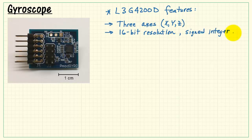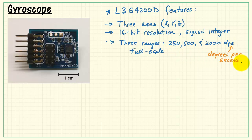Each axis has 16 bits of resolution and is provided as a signed integer. We have three ranges available, either 250, 500, or 2000 DPS, or degrees per second as full-scale values.